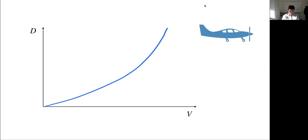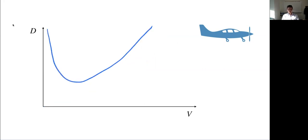For an airplane it actually looks quite different. It does have that same quadratic increase at high speeds, but drag also increases at low speeds. Why? An airplane needs to generate lift, unlike the other vehicles we've been discussing. The generation of lift itself is associated with a new type of drag we haven't discussed yet, called induced drag.